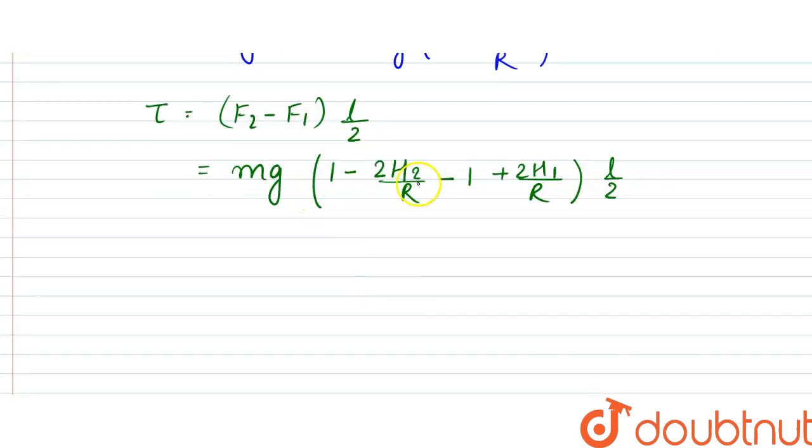So from here, this 1 and this 1 gets cancelled. We are left out with MG H1 minus H2. So, 2 by R would come out and it would be MGL. 2 and 2 would get cancelled here.